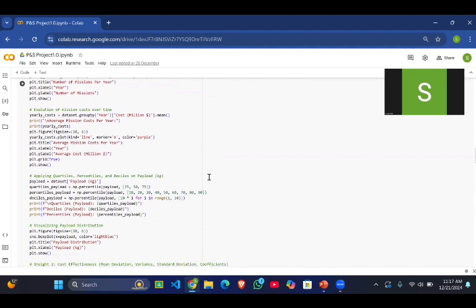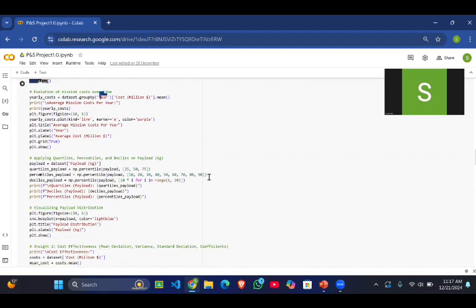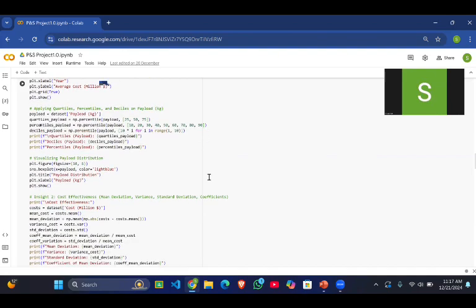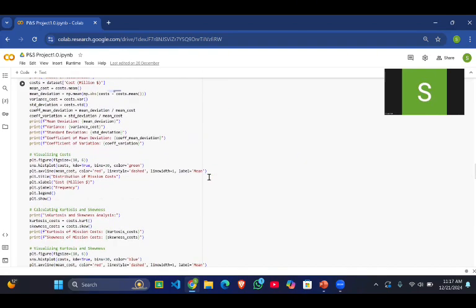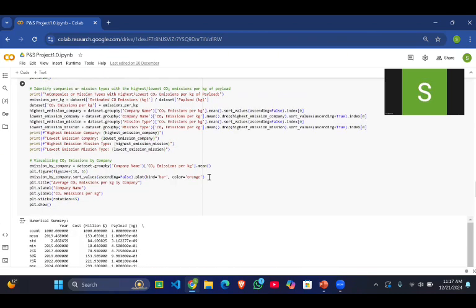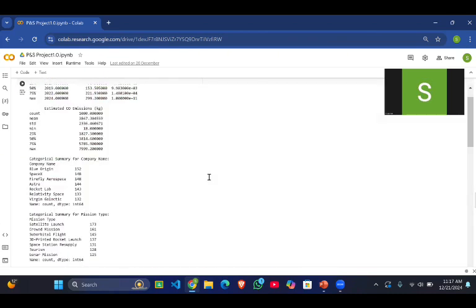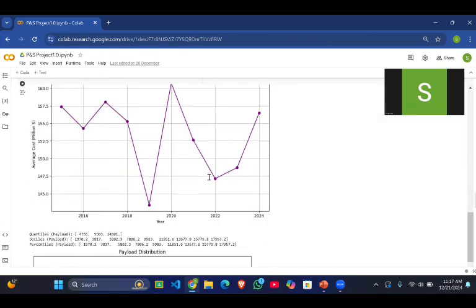Then we applied all the statistical concepts such as percentiles, quantiles, and deciles on the payload weights, and some other concepts such as skewness and kurtosis on average mission cost per year, to see which company has the highest mission cost per year and which has the lowest. So, this was our project.